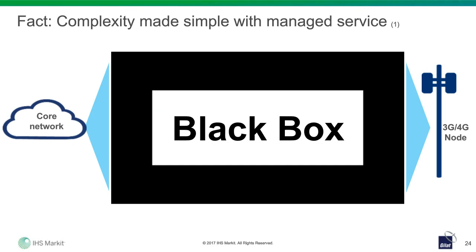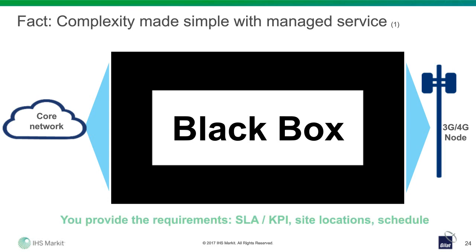In addition to the global NMS and layer two reducing complexity, I want to discuss how satellite backhaul can be treated as a black box. On the left you see the familiar core network to the cellular operators, and on the right are the 3G or 4G nodes. In between them is the satellite backhaul that can be treated as a black box. What mobile operators need to tell the satellite backhaul vendor are the requirements: the SLA and KPIs that need to be established, the required site locations, and the schedule. Once the requirements are set, consider the satellite backhaul as a black box — the satellite backhaul vendor should be able to do the rest.